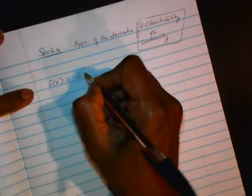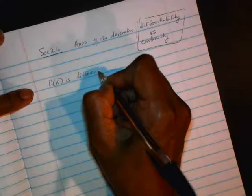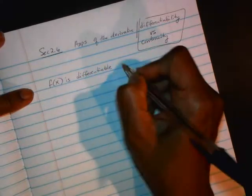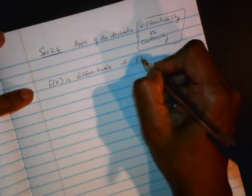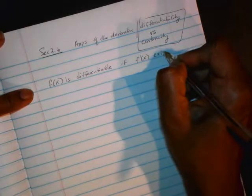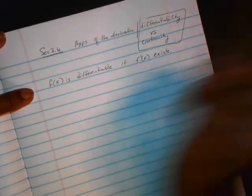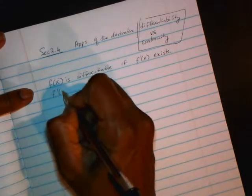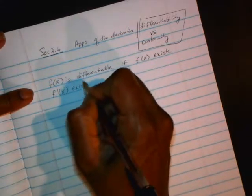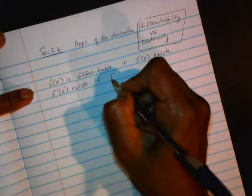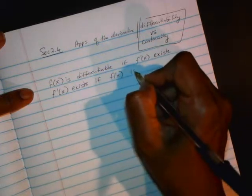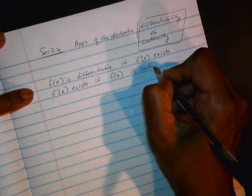Differentiable. f is differentiable if f' exists. That is, you can find the derivative. And when does this happen? f' exists if f is continuous, which we discussed in the previous section,